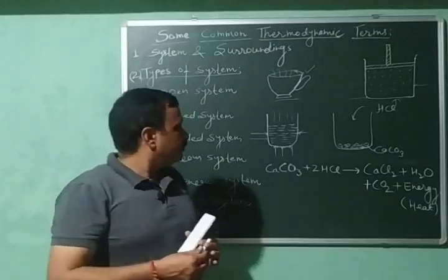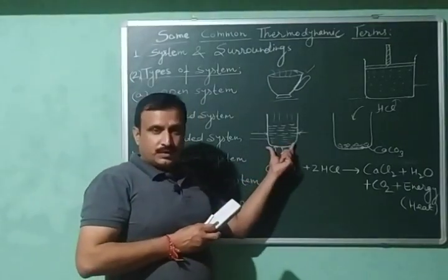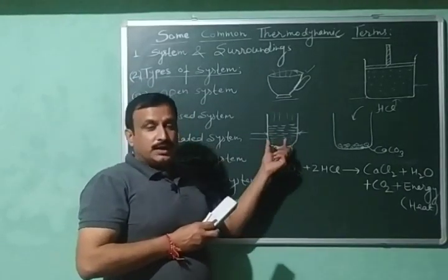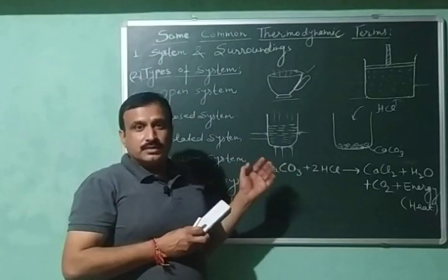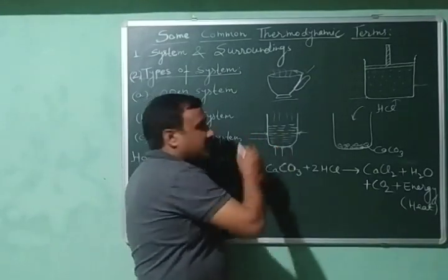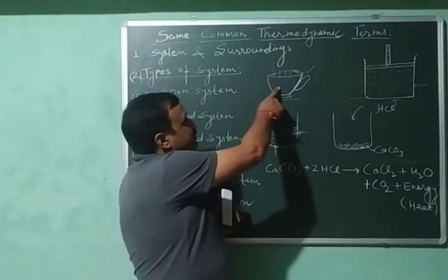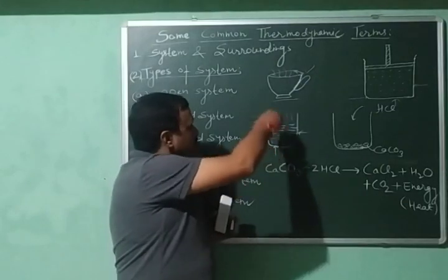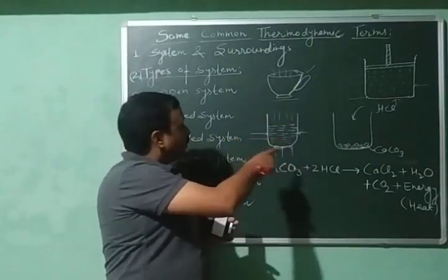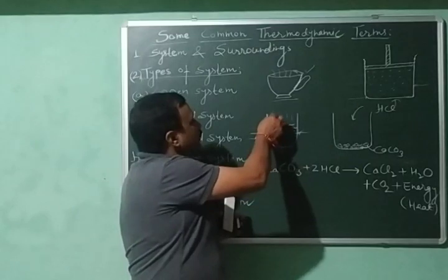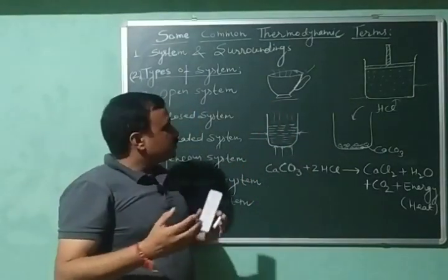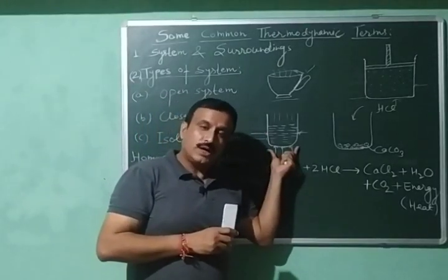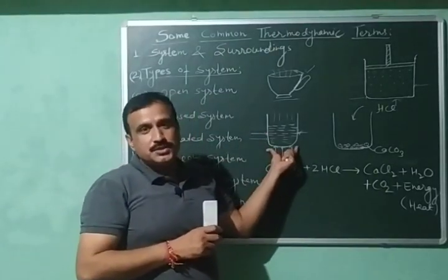Another example is a glass of water whose temperature is lower than the surroundings. In this case heat will flow into the system, while vapours will still go out. So heat is being exchanged — in the hot tea case it was going out, and here it enters into the system — and vapours are also leaving. This means both heat and matter are being exchanged, so this is again an open system.